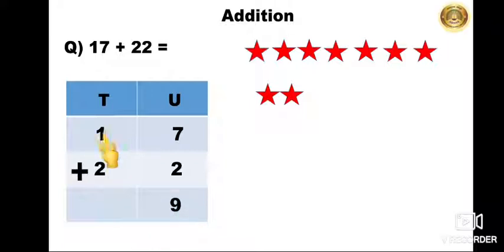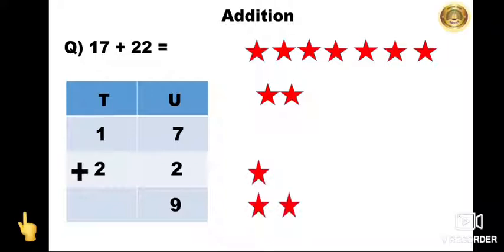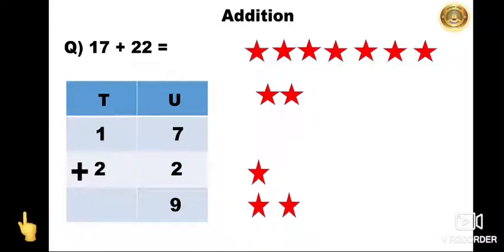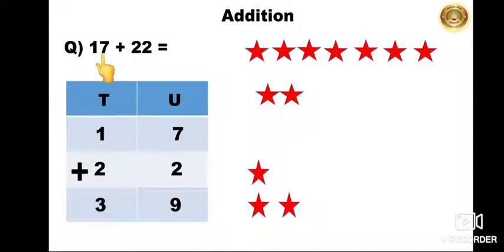Now we will add the tens place, that is 1 plus 2. First we will take 1 star, then we will add 2 more — 1, 2, 3. So 1 plus 2 is equal to 3. So we have got the sum. The sum of 17 plus 22 is equal to 39.